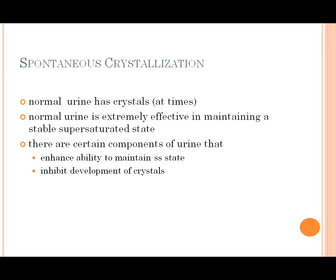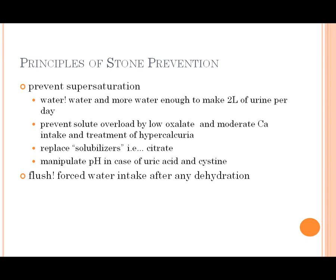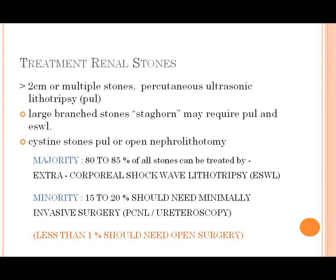Prevention principles: drink enough water — more than two liters — to prevent stone crystallization. Reduce solute overload by low oxalate and moderate calcium intake. Take treatment for hypercalciuria, replacement of tubular acid, and manipulate urine pH and uric acid levels, plus forced water intake after dehydration.